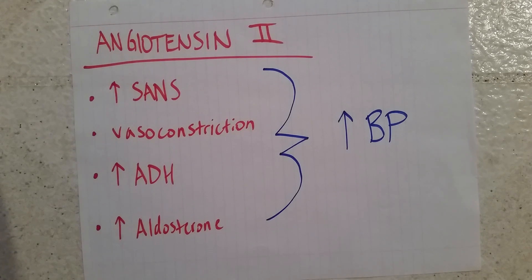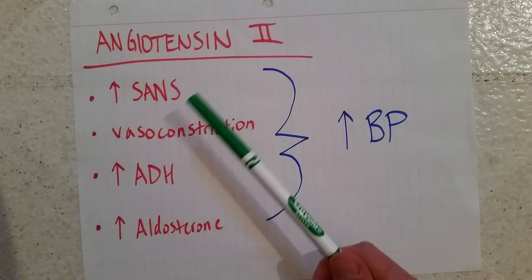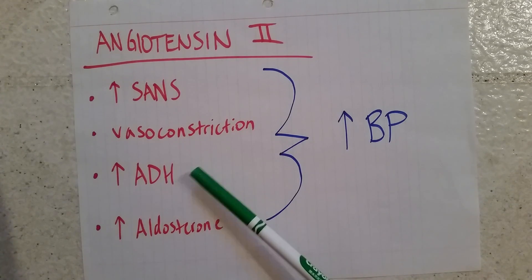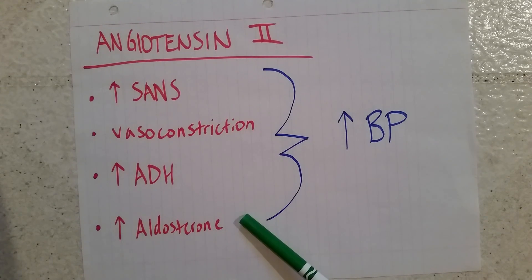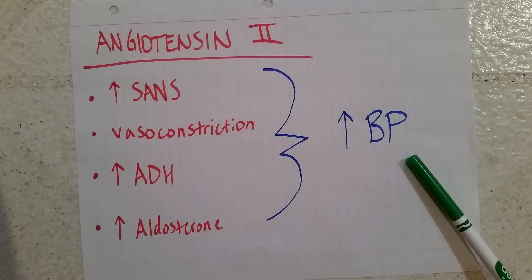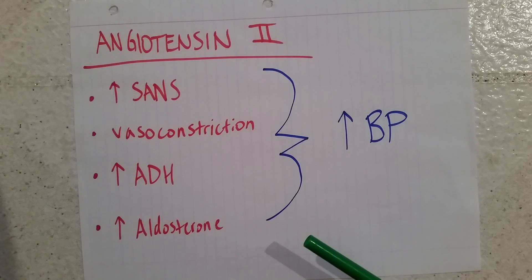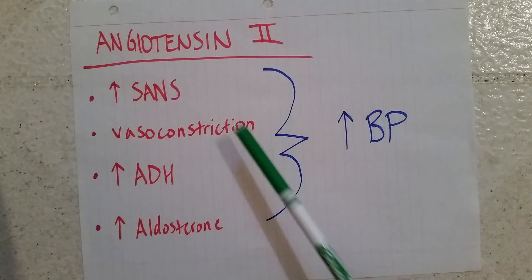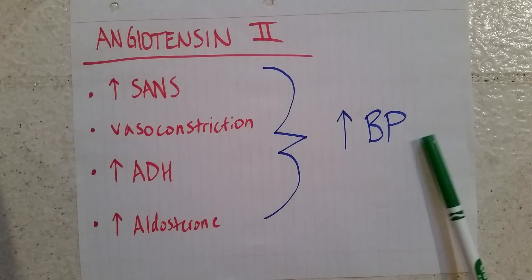So what does angiotensin 2 do? It does many things, but the main ones are: it increases sympathetic activity throughout the body, vasoconstricts blood vessels, causes release of antidiuretic hormone from the pituitary, and causes release of aldosterone from the adrenal cortex. All four of these actions lead to increased blood pressure. That is the full mechanism — from macula densa cells and baroreceptors activating JG cells to release renin, through angiotensin 1, through ACE, to angiotensin 2 raising blood pressure.